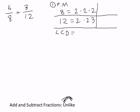Step 2: look through for each distinct prime factor — we have 2s and 3s. Count how many times each appears at most: there are three 2s in 8's factorization and two 2s in 12's. So the LCD needs three 2s. There's one 3 in 12 and zero 3s in 8, so we take one 3. The LCD is 2 times 2 times 2 times 3: that's 8 times 3, which equals 24.